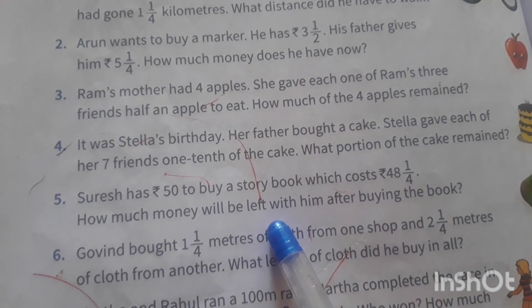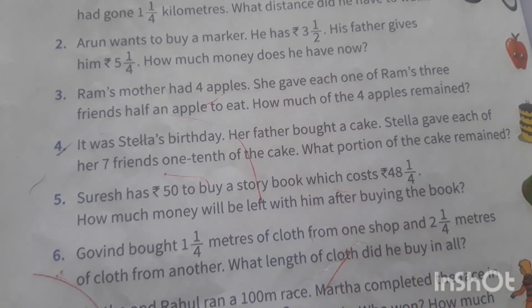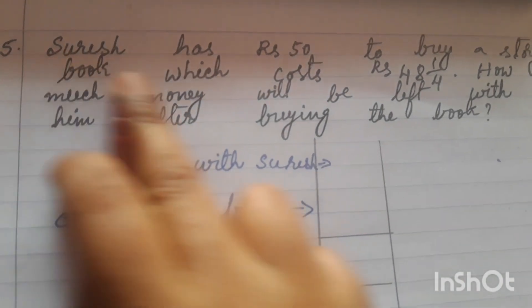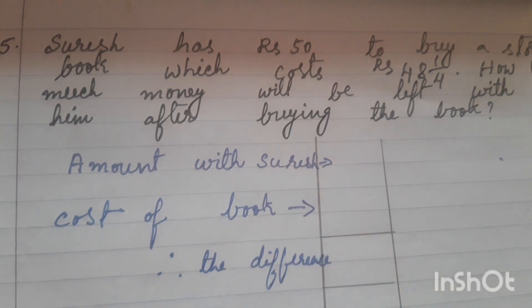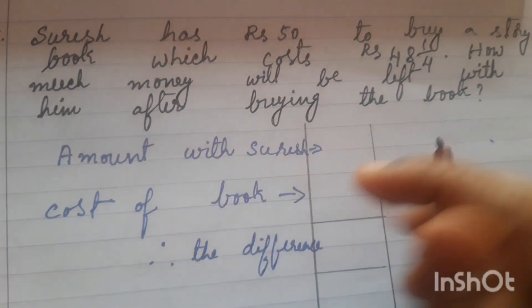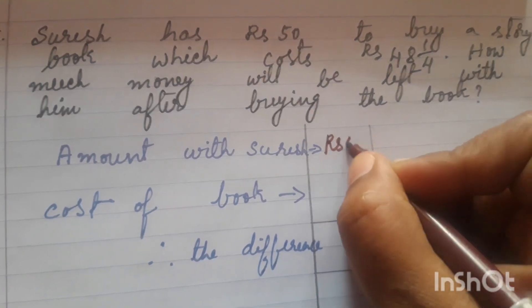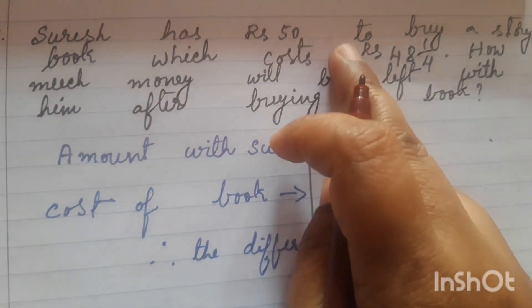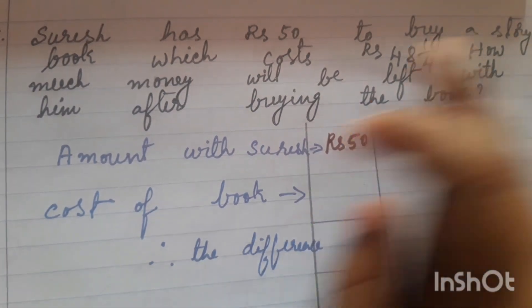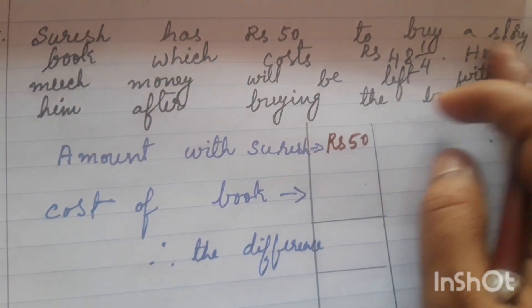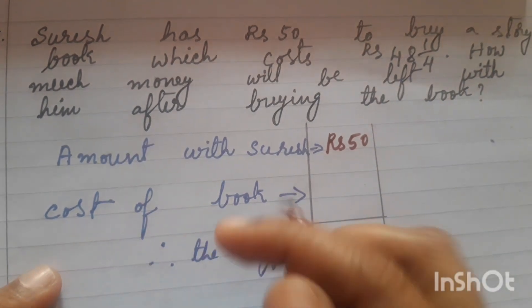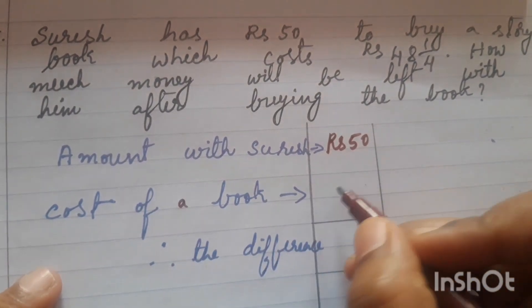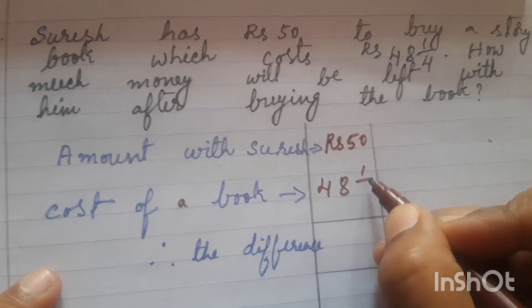So the amount with Suresh is Rs. 50 — it is given in the question. The cost of the book is 48 and 1 by 4 rupees.